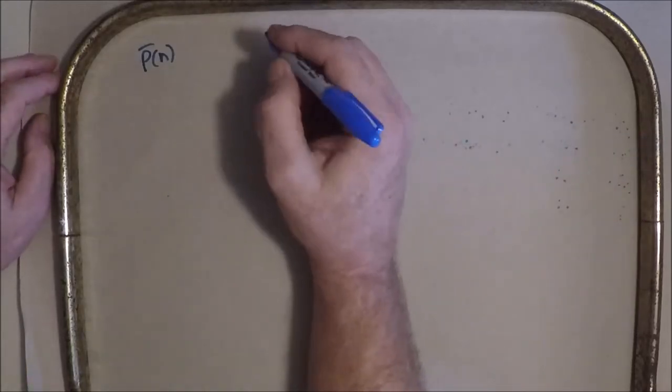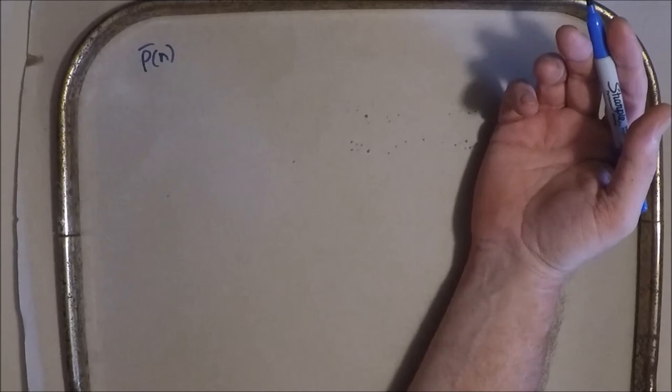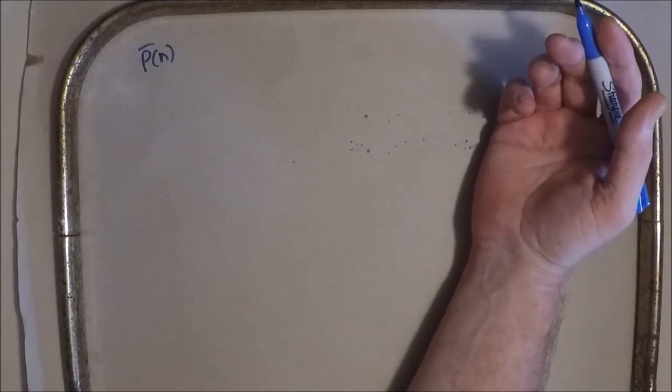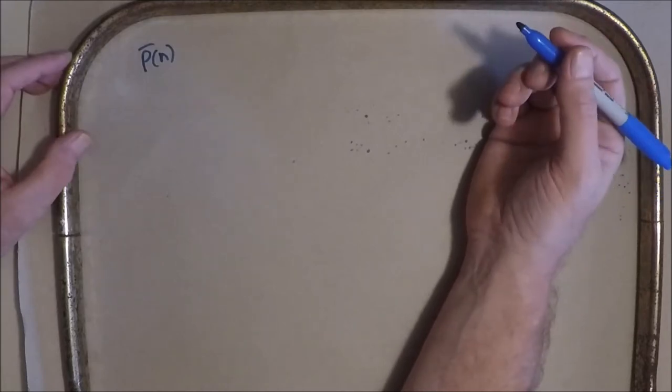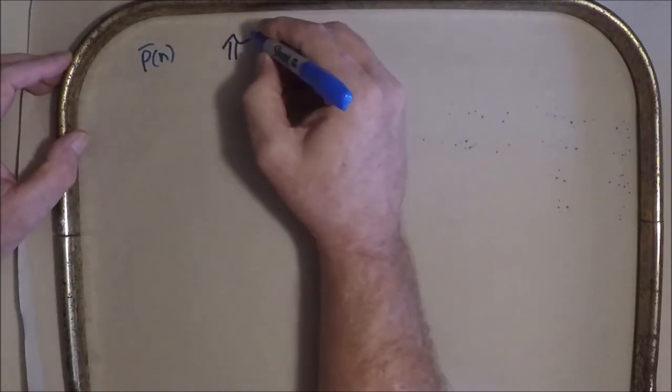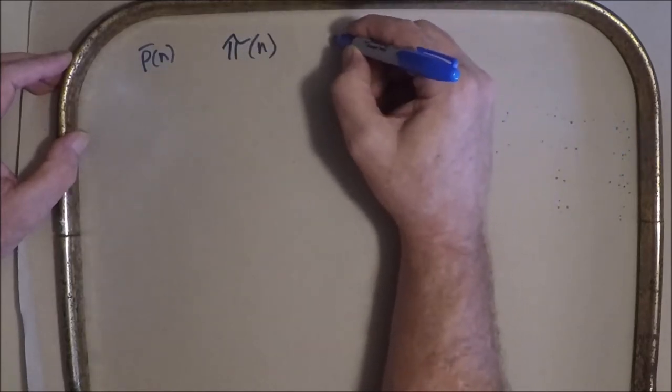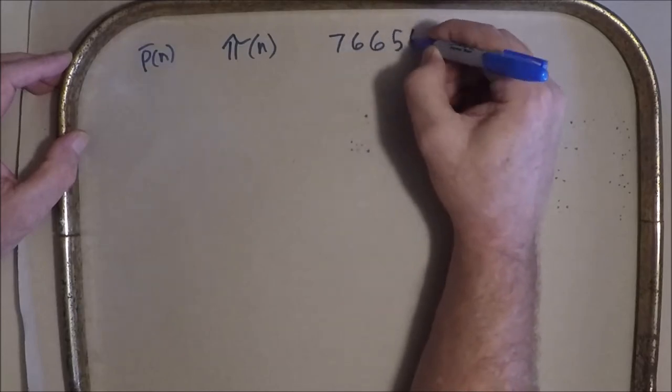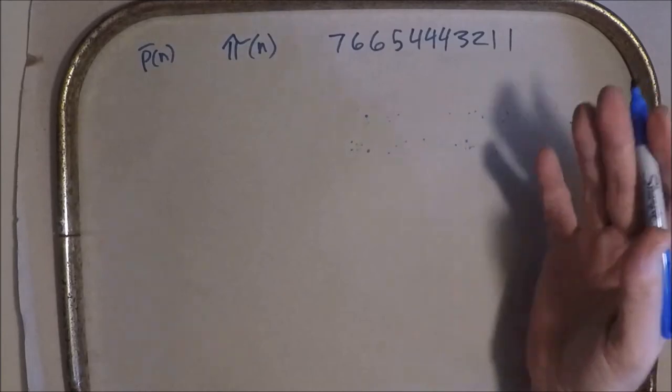But anyway, Courtiel and Lovejoy, they describe, they give a definition of over partitions, which seems to have propagated through all of these more recent papers. And that is to say, given some partition, then, and let's just say it's 7, 6, 6, 5, 4, 4, 4, 3, 2, 1, 1. And let's just say that's the partition.